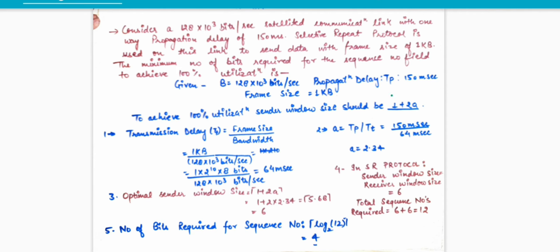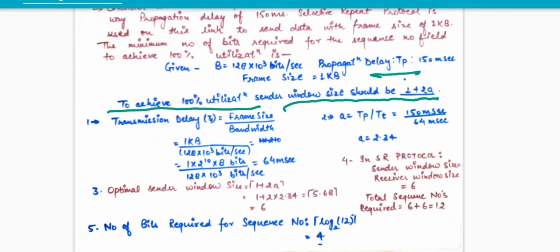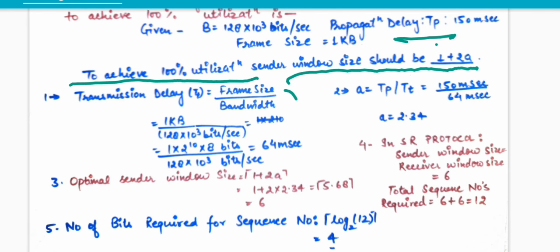I have solved all the steps here with numbering. Step 1: To achieve 100% utilization, the sender window size should be 1 + 2a. Since a equals tp upon tt, we have propagation time but not transmission time. So first we need to find the transmission time. Transmission delay tt equals frame size divided by bandwidth.